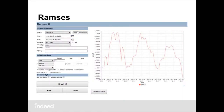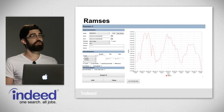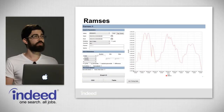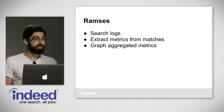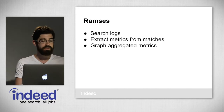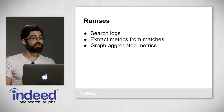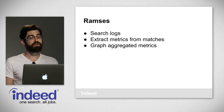The next big improvement we made was a program called Ramses, created by our CTO Andrew Hudson. It was named for his love of Egyptian culture and the fantastic amount of RAM used when we first made it in 2010. Indeed's a search company, and search is one of our core strengths, so we approached analytics like a search problem. Ramses was at its heart a search engine for logs: we'd build an inverted index out of all our logs, search through them, extract metrics from the matches, and graph those aggregated metrics.